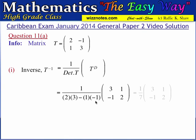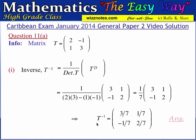This expression reduces to 1 divided by 7 multiplied by the adjoint matrix [3, 1; -1, 2]. To finalize, we divide each element by 7: T to the minus 1 becomes [3/7, 1/7; -1/7, 2/7]. And so this is the inverse matrix T to the minus 1.